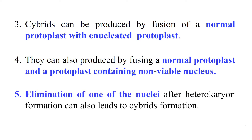We can also produce cybrids by fusing a normal protoplast with a protoplast containing a non-viable nucleus. In this case the nucleus is present but it is inactive or non-viable, so cybrids will be formed. Finally, we can also eliminate the nucleus after fusion. Once fusion has occurred, there is a stage when the two nuclei are distinct. During that stage we eliminate one of the nuclei, and as a result the hybrid cell will contain only one nucleus from one parent and cytoplasm from both parents.